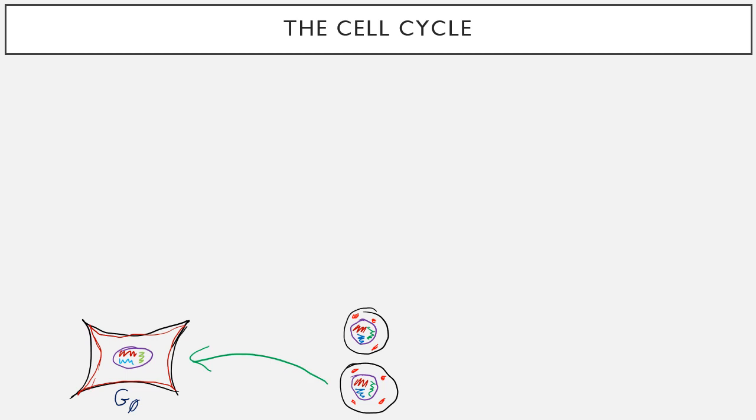So one of these daughter cells decides to go G0. This is commonly the case with something in the body called stem cells, that a stem cell will divide. One of its daughter cells will differentiate, grow up and get a job, so to speak. The other one will decide to stay home and have more children, will stay in the cell cycle.